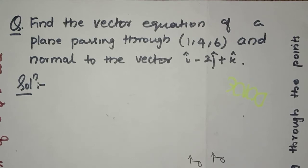Find the vector equation of a plane passing through (1, 4, 6) and normal to the vector i cap minus 2j cap plus k cap.